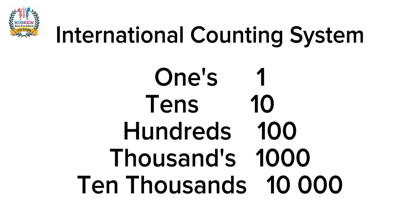you must remember this International Counting System. One digit number has place value 1, two digit number has place value 10, three number of digits are hundreds, four number of digits are thousands, five number of digits are ten thousands. So this is a basic concept of International Counting System.